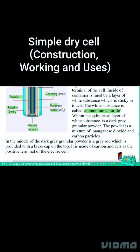In the middle of the dark grey granular powder is a grey rod which is provided with a brass cap on the top. It is made of carbon and acts as the positive terminal of the electric cell.